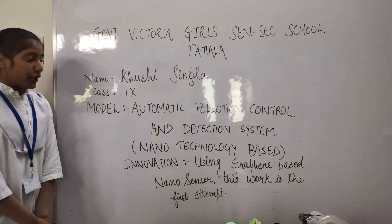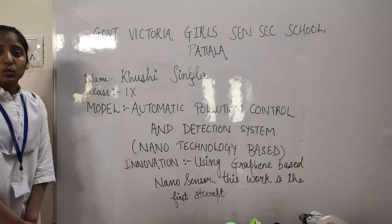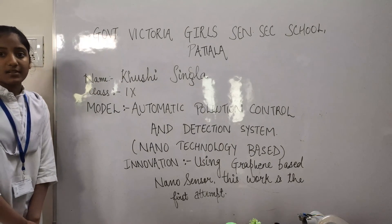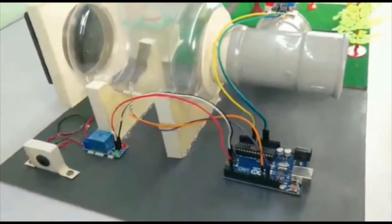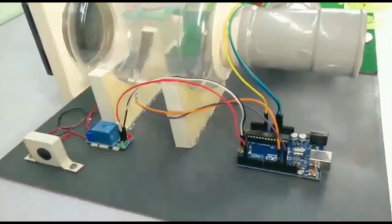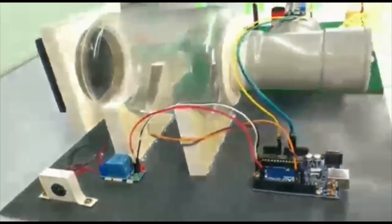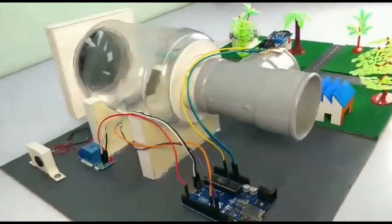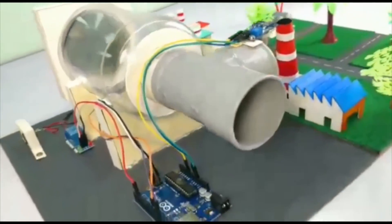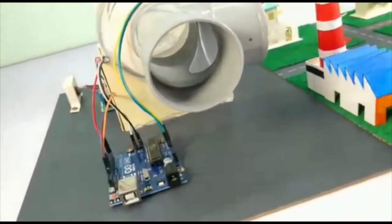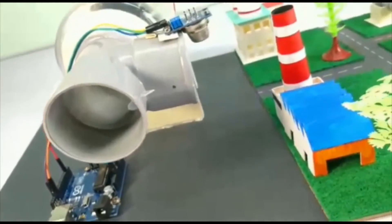The innovation of my model uses a graphene-based nanosensor, and this work is a first attempt. I am now showing you all the components of my model, such as the Arduino nanoboard, relay, adapters of 12V and 9V which are attached to my model, and the graphene-based nanosensor.